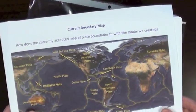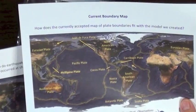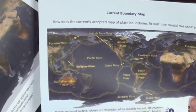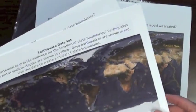This tool relies on a sheet protector and six color copies: one, the current boundary map, essentially the answer key to the puzzle we're posing the students, and then data sets.